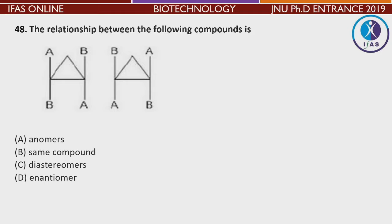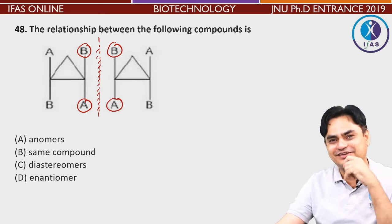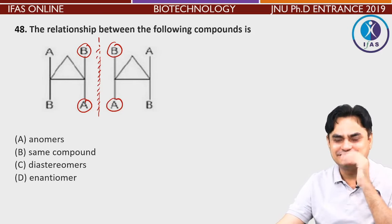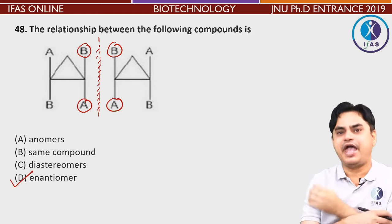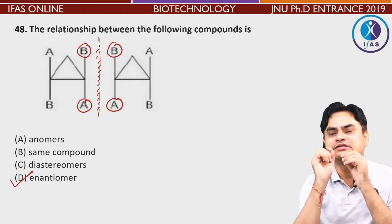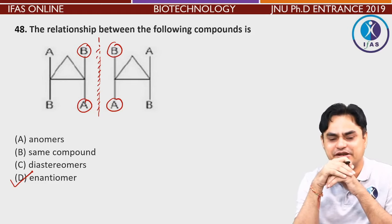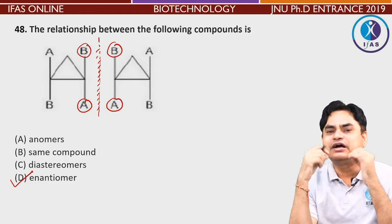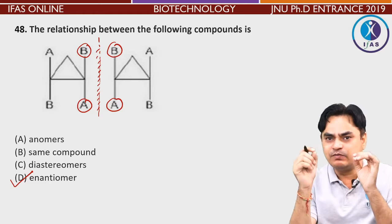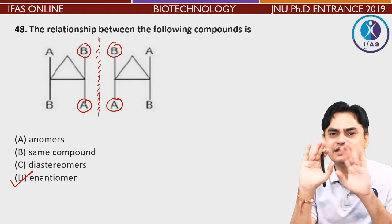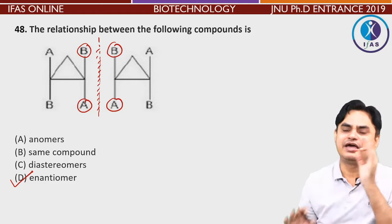The structures shown are mirror images of each other — B and A are mirror images. Mirror images are referred to as enantiomers. In enantiomers, the difference occurs at one chiral carbon. Diastereomers have differences at more than one place but not all places. Here, since these are mirror images of each other, the answer is enantiomers.